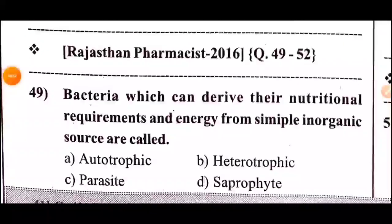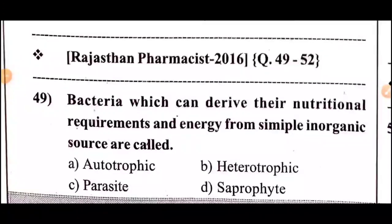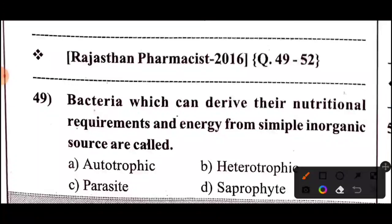90th question: Bacteria which can derive their nutritional requirements and energy from simple inorganic sources are called — 5 seconds. Answer: Option A — Autotrophic. Bacteria deriving nutrition from simple inorganic sources are called autotrophic.